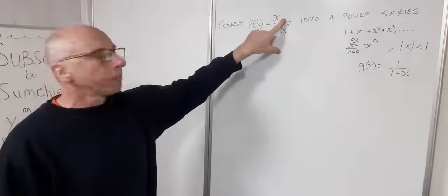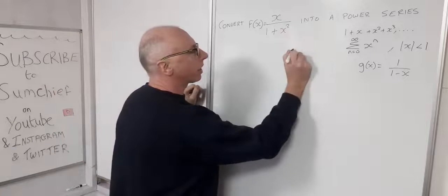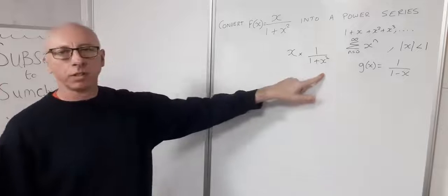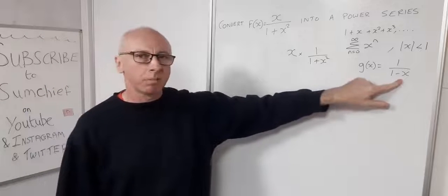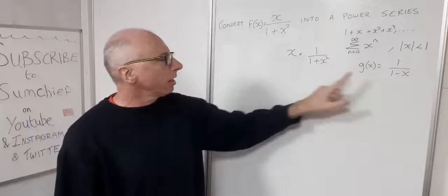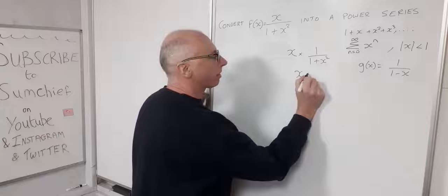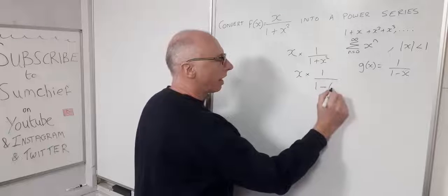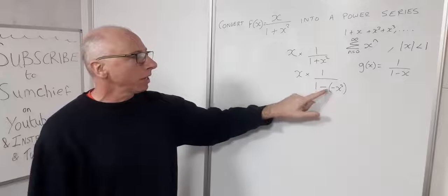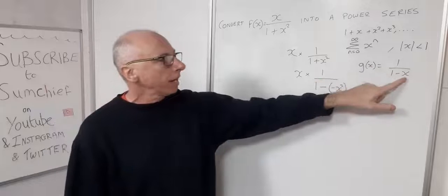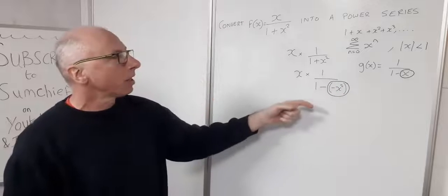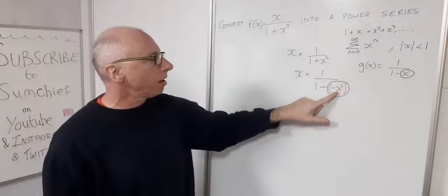We've got an x on the top, so we can rewrite x over 1 plus x squared as x times 1 over 1 plus x squared. Now looking at the 1 over 1 plus x squared part, we can take in a minus sign and rewrite it as x times 1 over 1 minus minus x squared. That gives us 1 minus negative x squared, which now matches our known form.